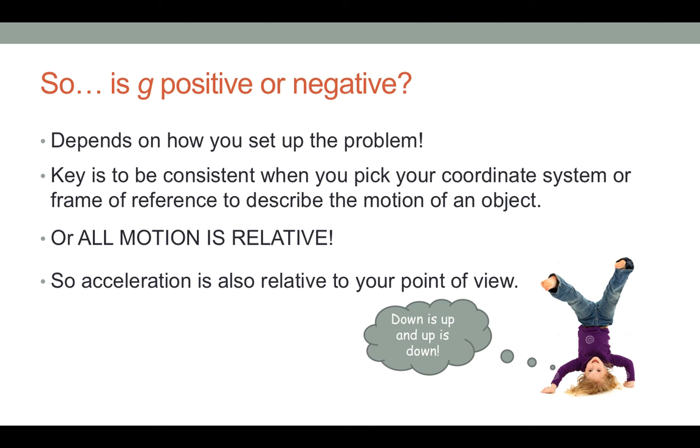If an upward velocity is set to be a positive number, then automatically the acceleration due to gravity must be set to be negative 9.8 meters per second squared. Once up is positive, down is negative. All motion, including acceleration, is relative to your point of view, and your point of view can, in fact, be unconventional.